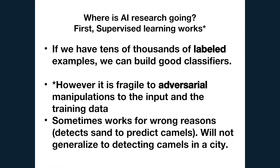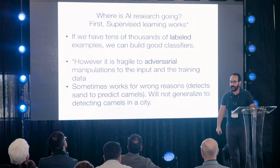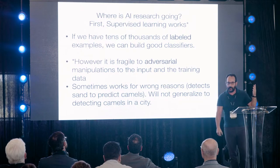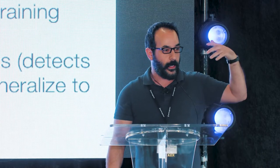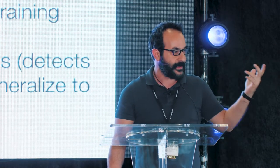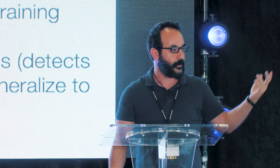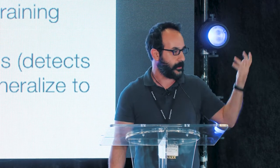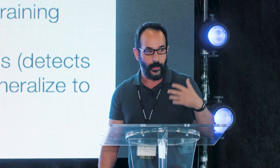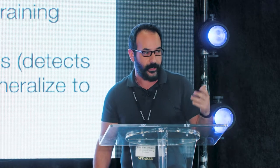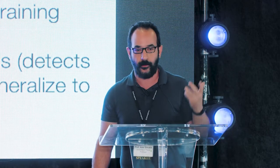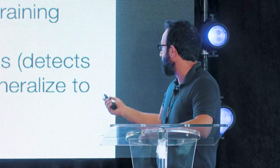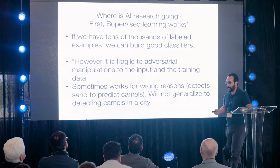Sometimes supervised models work for completely wrong reasons. For example, a model may detect a camel by detecting sand, because every time there's sand in the training set, it's always a camel. So in your test set it looks great, but when you try to detect camels in a city, it will fail miserably.